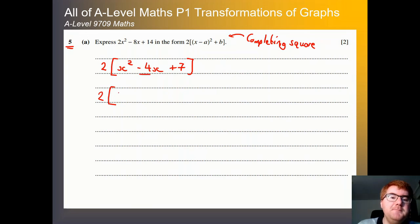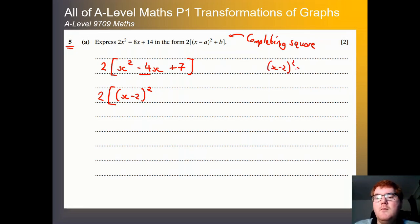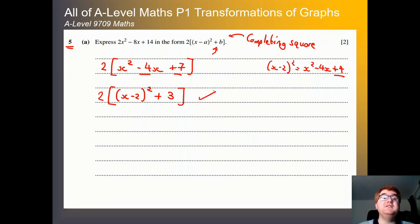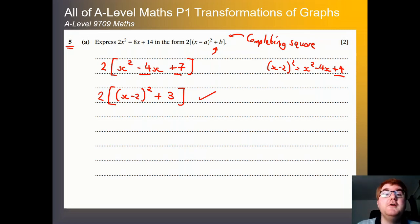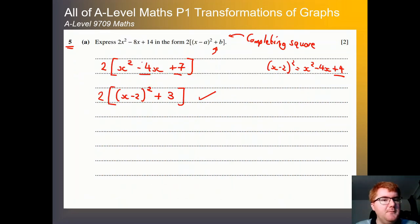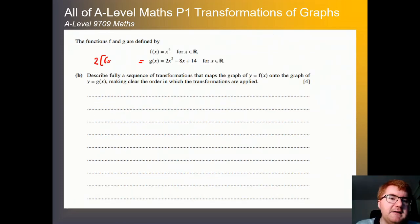We find half of −4 equals −2, pop that in. Expanding normally gives x² − 4x + 4, but we want +7, so we add 3. This gives us 2((x − 2)² + 3). If you need more practice on this, I'll put a link to my quadratics video. Once we have this, writing the function as 2(x − 2)² + 3 is why we used the first part.